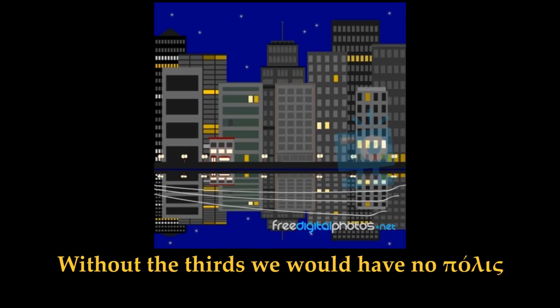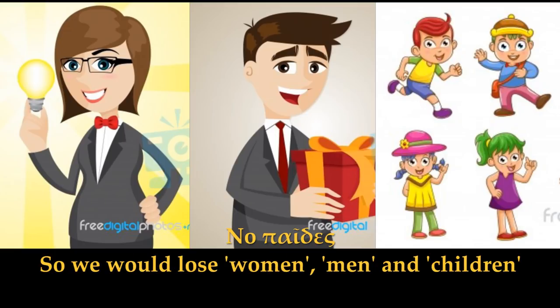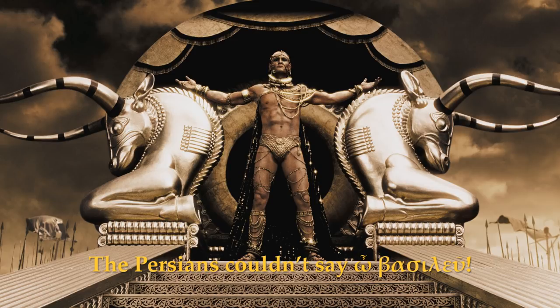Without the thirds we would have no polis. No polis. No gunaikes, andres, or paides. No paides. So we would lose women, men, and children. The Persians turn and say...